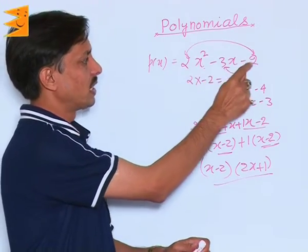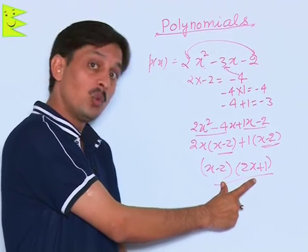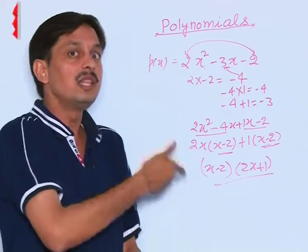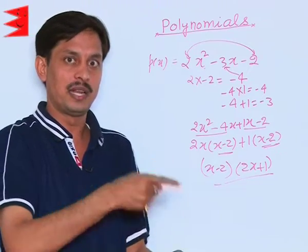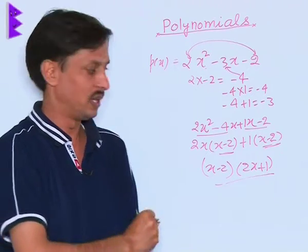2x² - 3x - 2 has been expressed as the product of two linear polynomials. So in other language you can define what is a quadratic polynomial: it is a product of two linear polynomials.